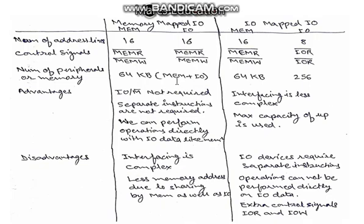Disadvantage of memory mapped I/O: interfacing is complex because there are 16 address lines and we have to derive the interfacing logic for memory and I/O devices to connect in our system. Less memory addresses due to sharing by memory and as well as I/O.